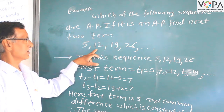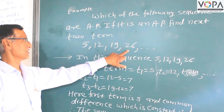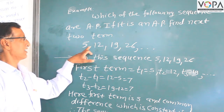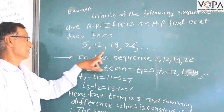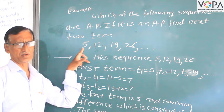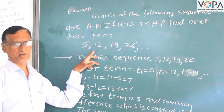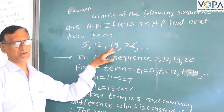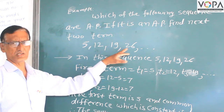Consider the sequence: 5, 12, 19, and 26. In this sequence, the first term is 5, the second term is 12, the third term is 19, and the fourth term is 26.